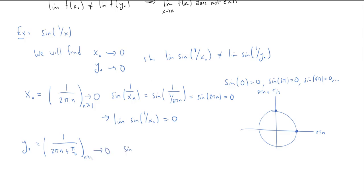However, if I look at sine of one over Y sub n, this would be the sine of, well, let's just skip through all the reciprocal reciprocals, we get two pi n plus pi over two. And the sine of something of the form two pi n plus pi over two is actually one. And therefore, the limit of the sine of one over Y dot is equal to one.